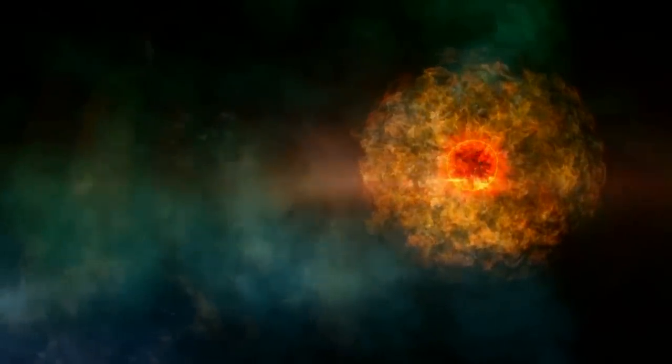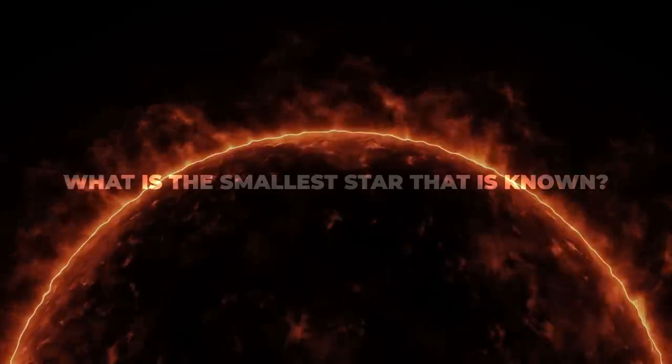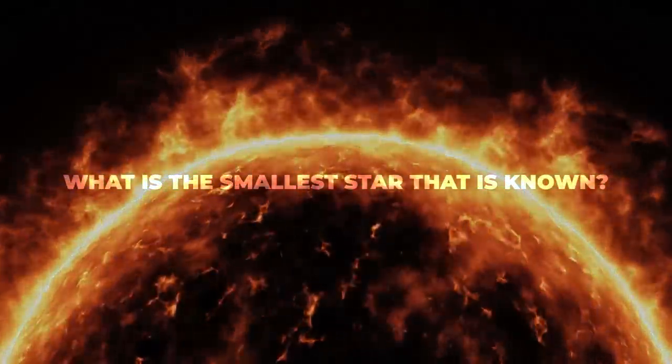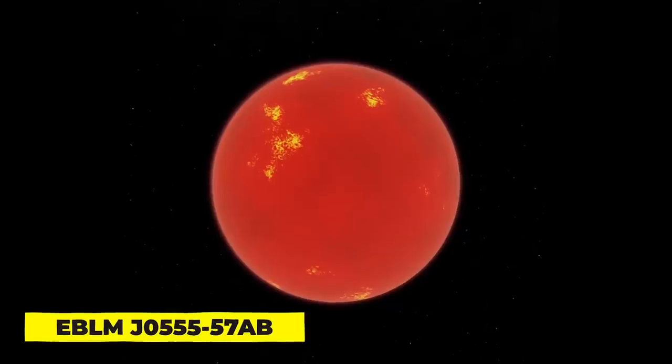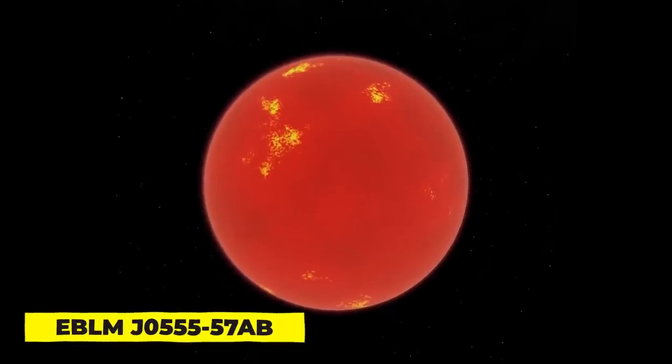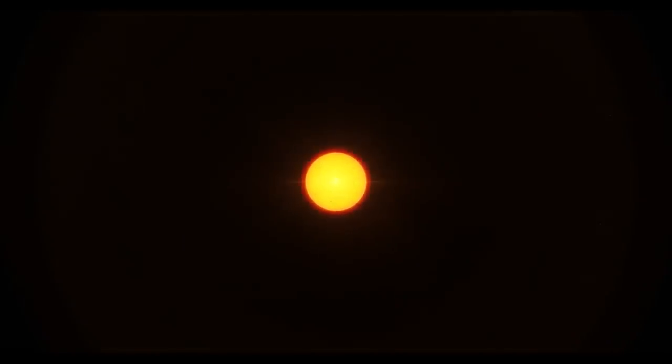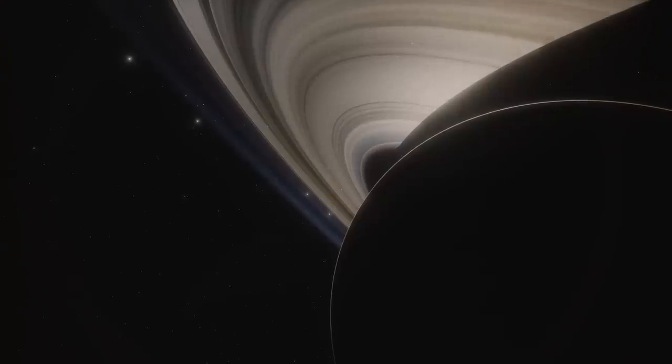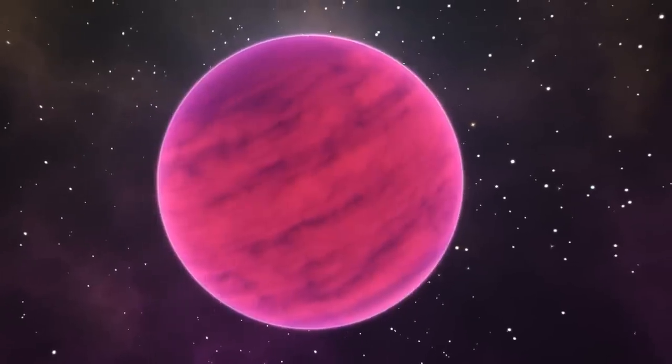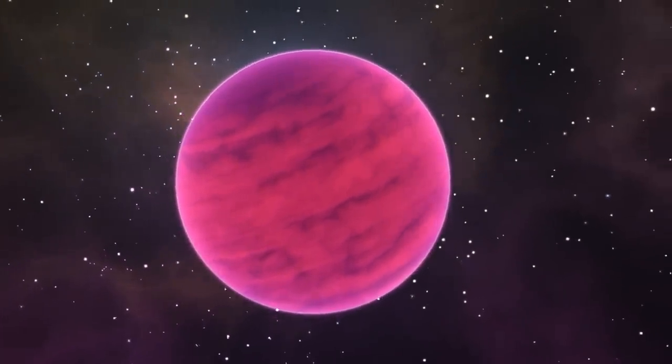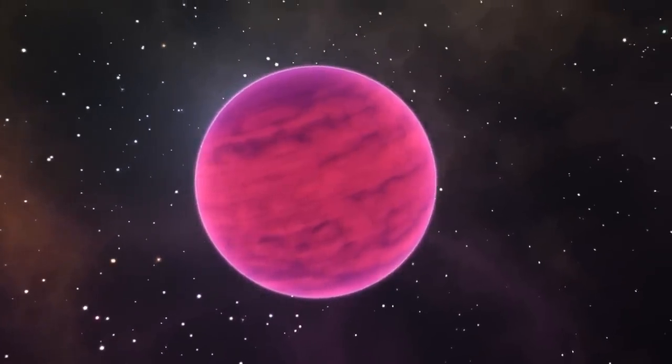However, even if our Sun is not the largest star in the cosmos, it is also not the smallest. What is the smallest star that is known? EBLM J055557AB has earned this distinction. Scientists noted that EBLM J055557AB is smaller than Saturn and just about manages to qualify as a star. If it had a lower mass, it would be considered a failed star known as a brown dwarf since it couldn't support nuclear fusion at its core.